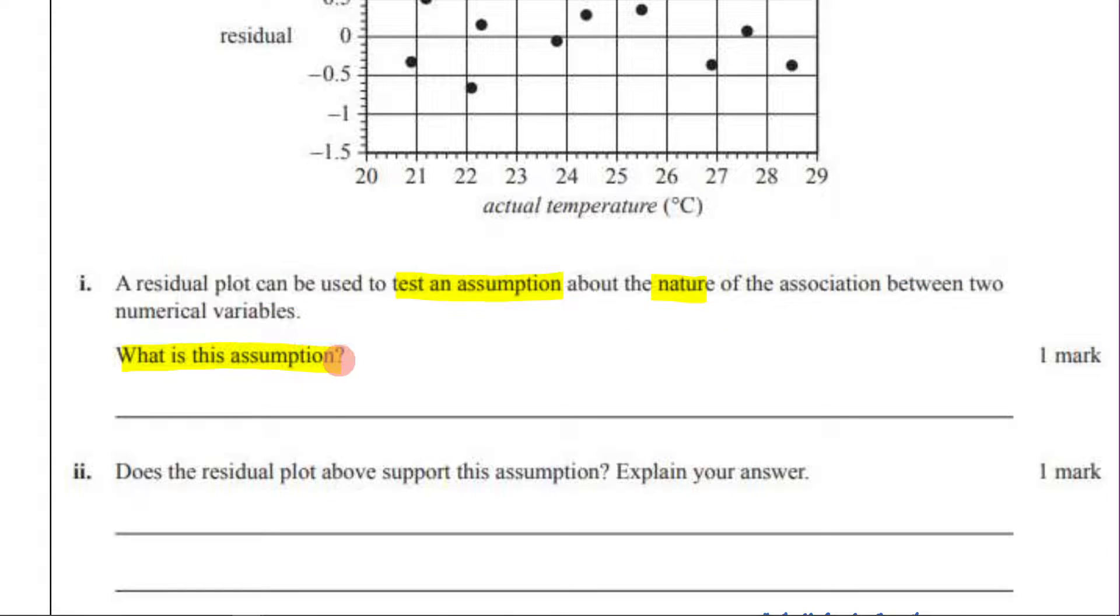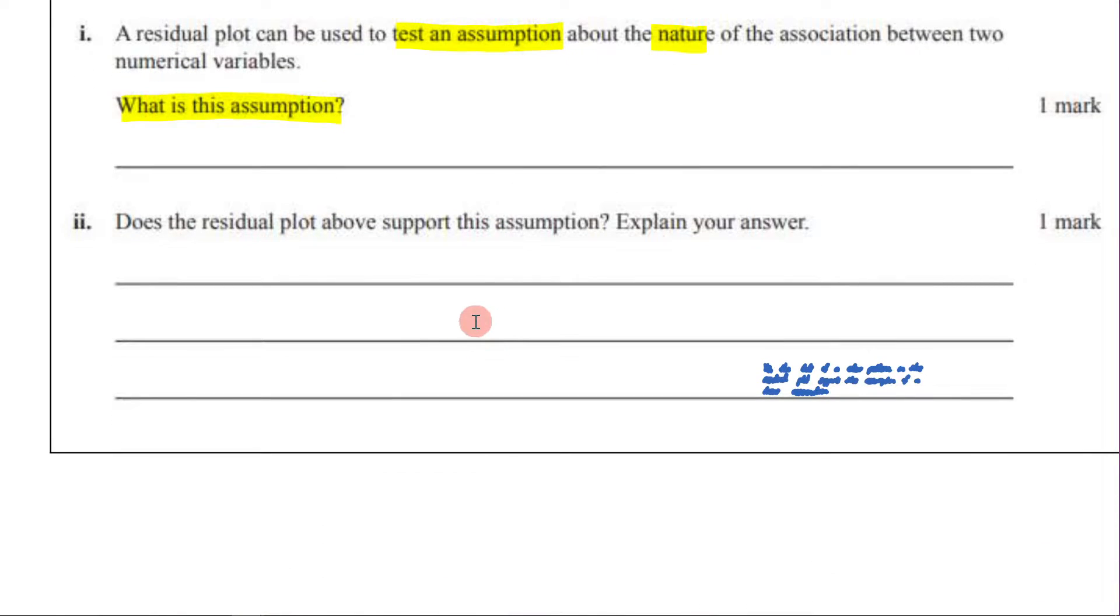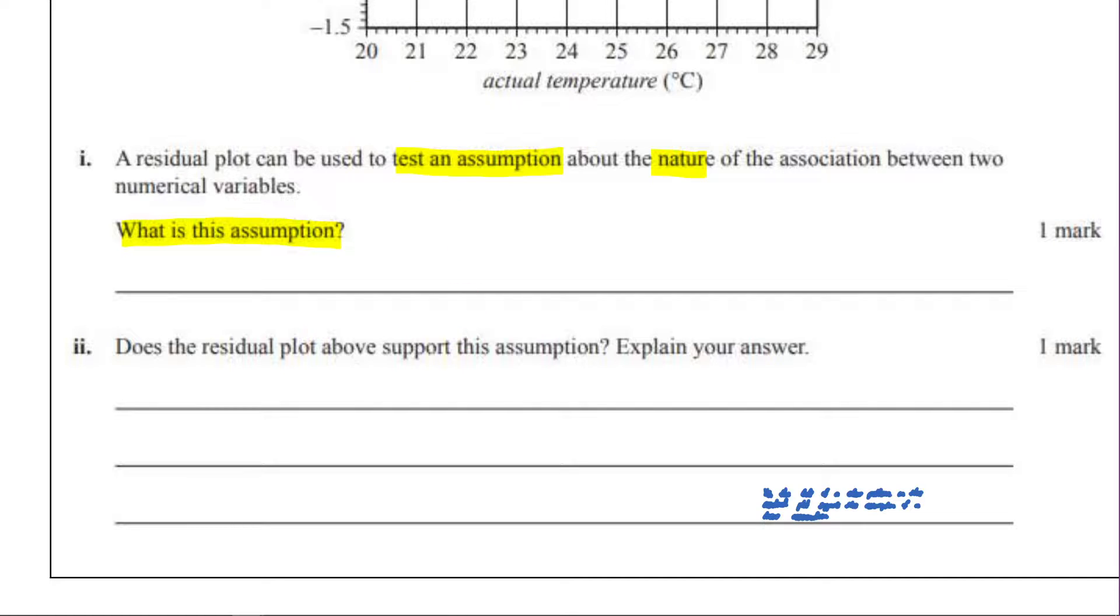So what assumption are you testing for when you make a residual plot? Well, you're making the assumption that the association is linear. That's what you're testing for. So I'm going to write here, and I'm going to write it in blue, that the association is linear.